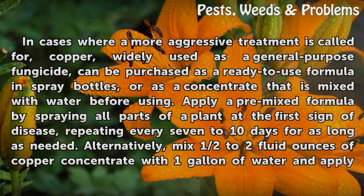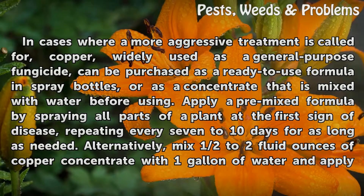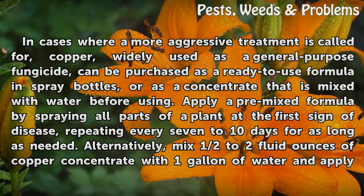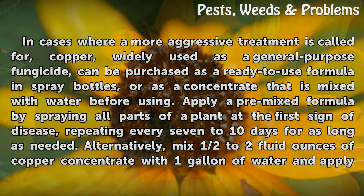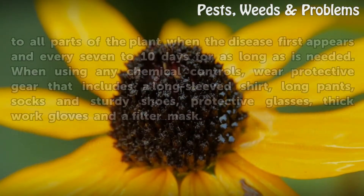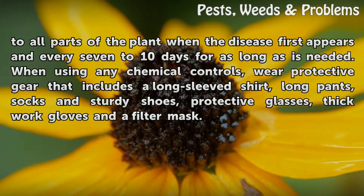In cases where a more aggressive treatment is called for, copper, widely used as a general purpose fungicide, can be purchased as a ready-to-use formula in spray bottles, or as a concentrate that is mixed with water before using. Apply a pre-mixed formula by spraying all parts of a plant at the first sign of disease, repeating every seven to ten days for as long as needed. Alternatively, mix half to two fluid ounces of copper concentrate with one gallon of water and apply to all parts of the plant when the disease first appears, every seven to ten days for as long as is needed.